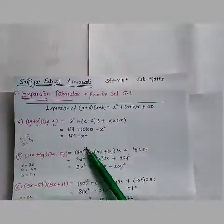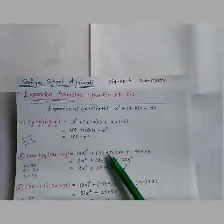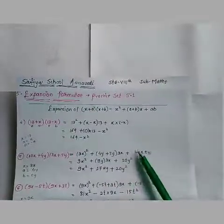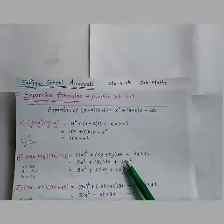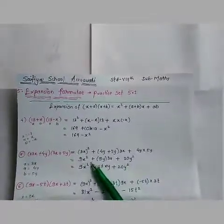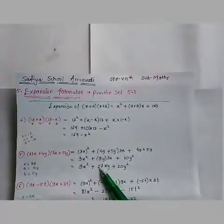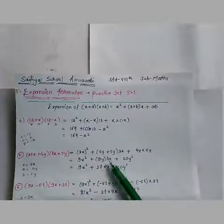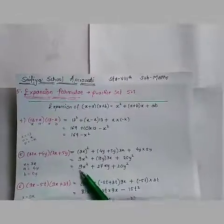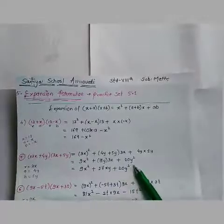Now solving: 3² is 9, x² is x², so 9x². Plus 4y + 5y is 9y, into 3x gives 27xy. Plus 4y into 5y: 4×5 is 20 and y×y is y², giving 20y². So the final answer is 9x² + 27xy + 20y².